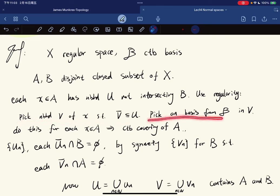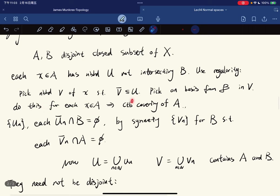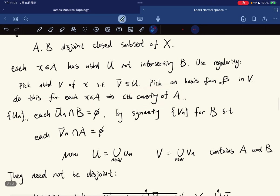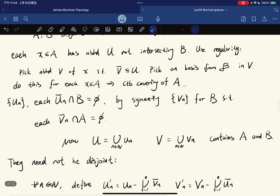And we pick a basis in V that's contained in V. So we do this for each x in A, so we have a countable covering of A. Let's say U_n. Now we know that each closure of U_n is disjoint with B. And also by symmetry, we can do the same thing for the set B such that we get a countable covering for B such that its closure in the set A gives you back the empty set.